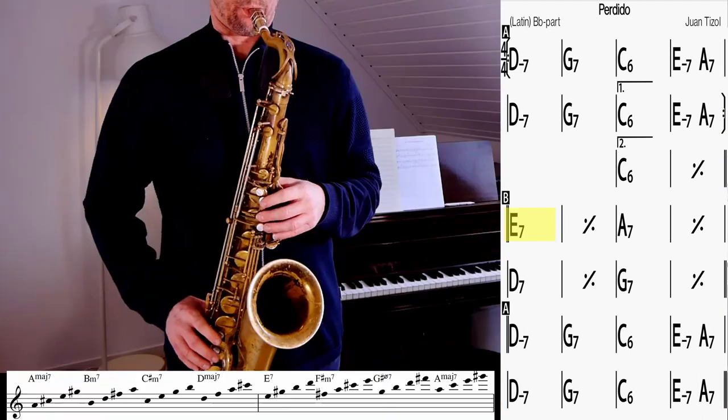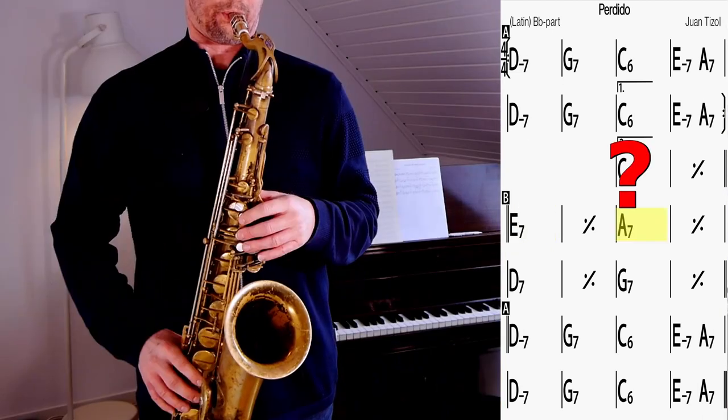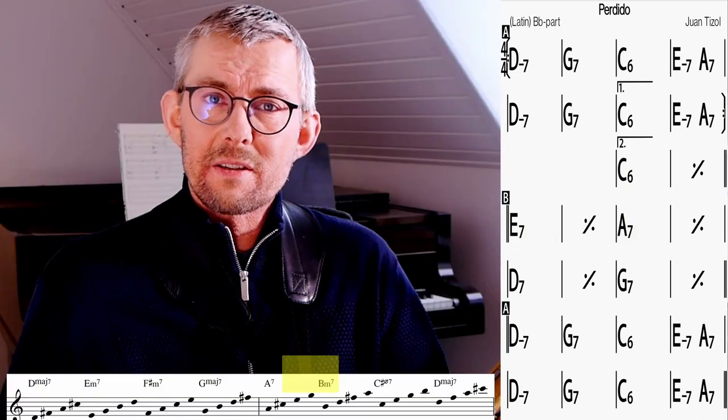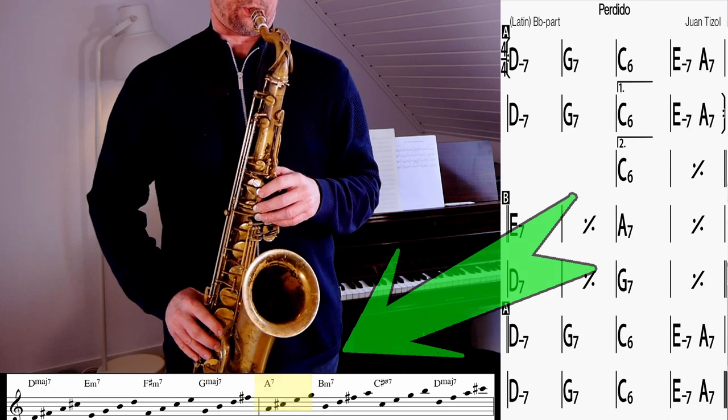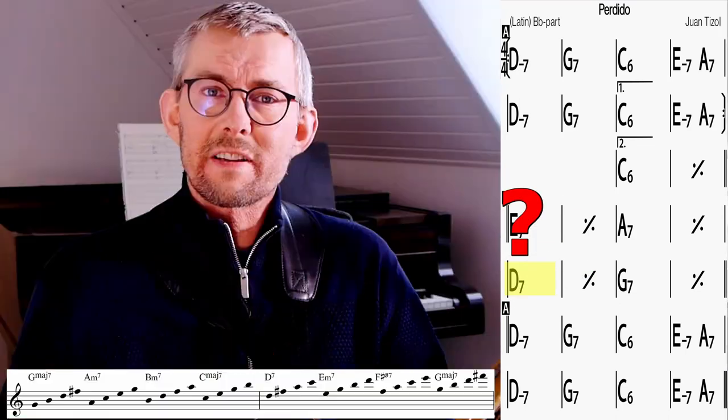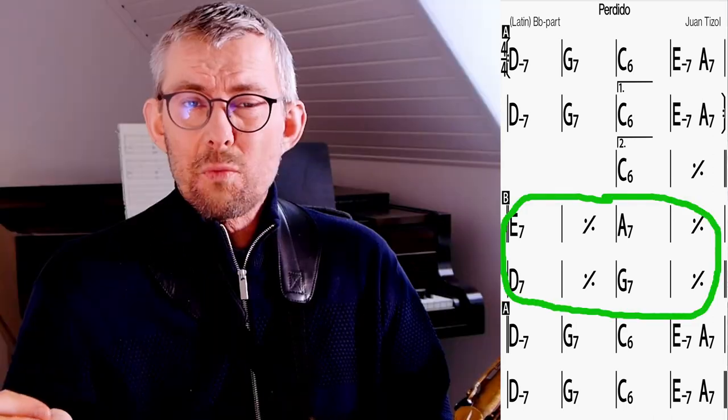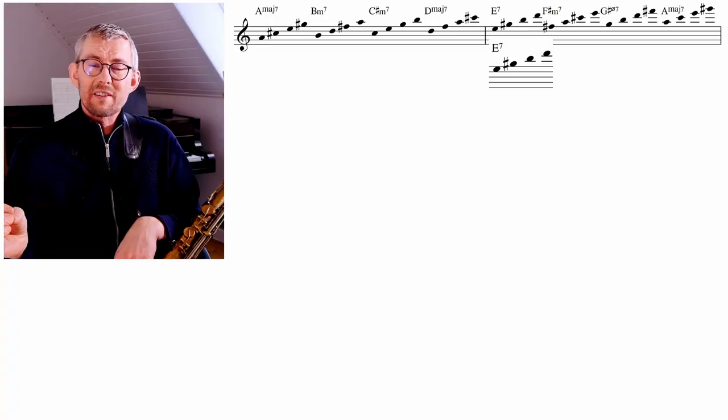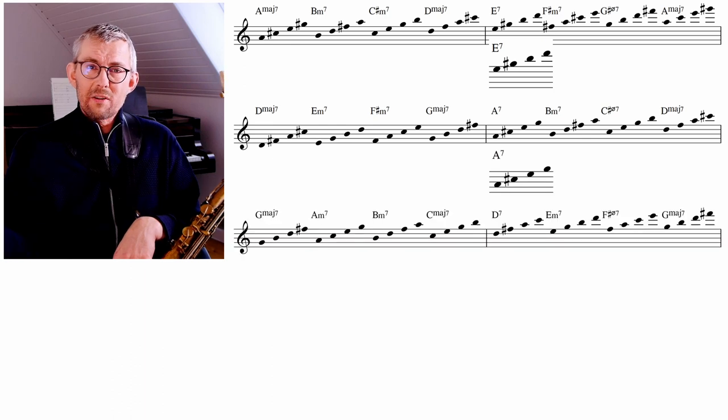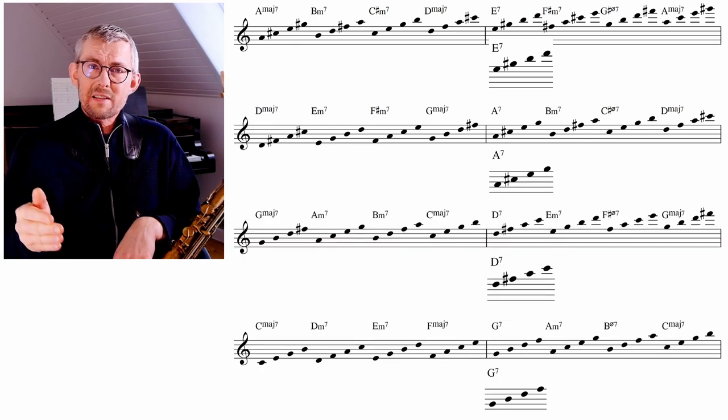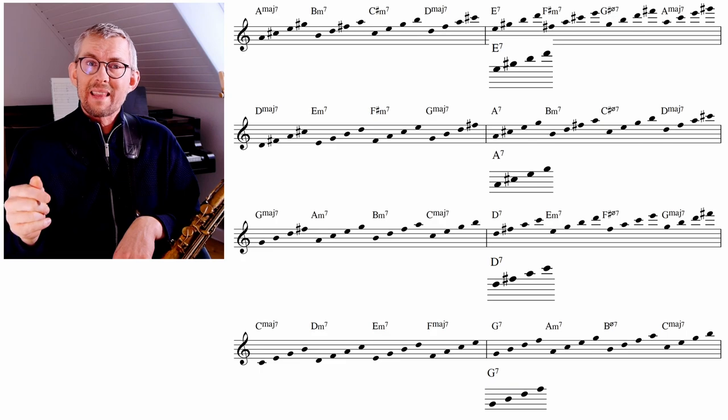E7 is the fifth of A major. A7 is the fifth of D major. D7 is the fifth of G major. So when you are playing the bridge of Perdido you're actually switching the key four times. You're playing the chords and you're playing the scales where this chord is the fifth degree and playing that scale.